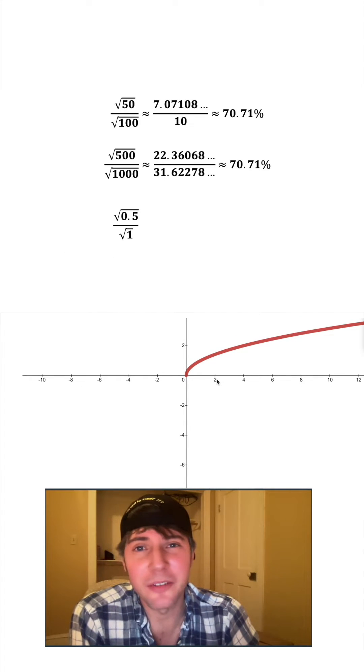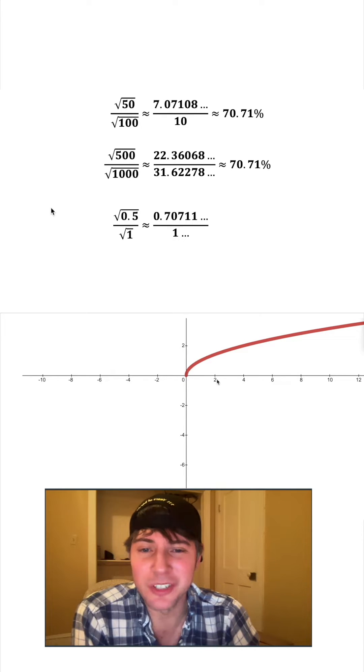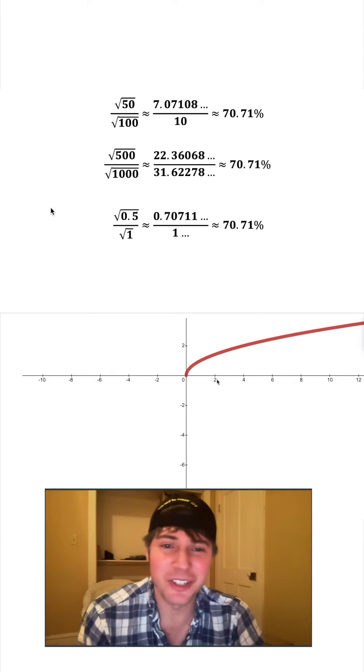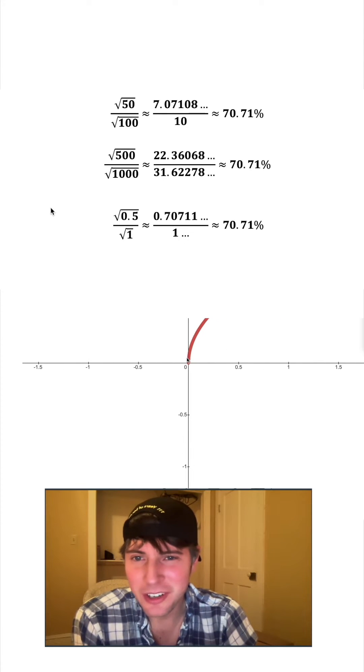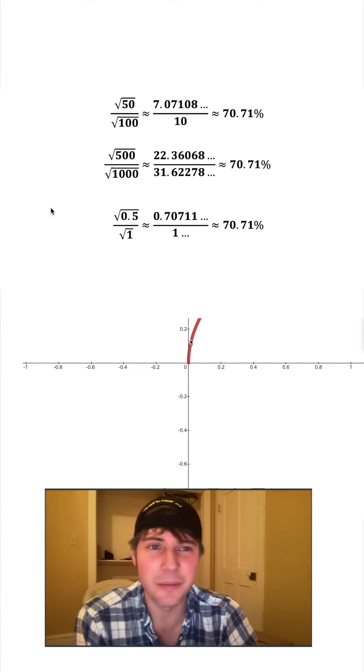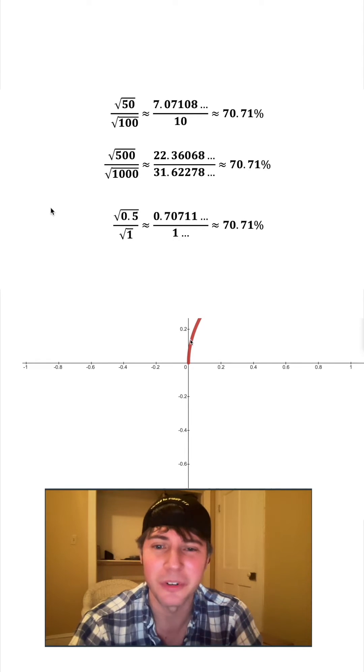Let's look at this ratio, square root of one half to one. Well, square root of one is one and square root of one half is 0.70711. So that means it's also 70.71 percent. Even though as we get closer and closer to zero and as we zoom in, it looks like it's getting steeper, it's still that same ratio of roughly 70.71 percent.